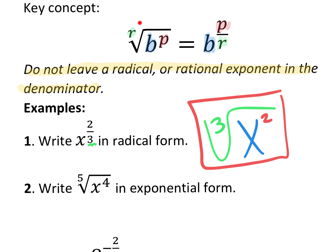You can go from a radical to a rational exponent or from a rational exponent back to a radical. Right here we have a radical, and they want us to write it in exponential form. Power over root — so the answer is x to the four-fifths power.